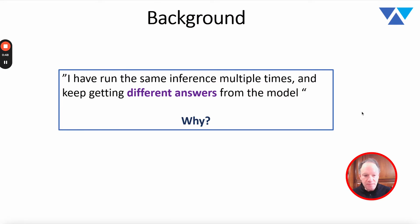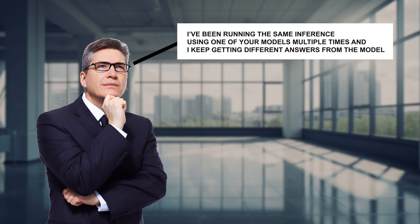To dive into this, the background for this exploration was a question from a user in our community. It's a very simple question. It said, I've been running the same inference using one of your models multiple times, and I keep getting different answers from the model. Why?